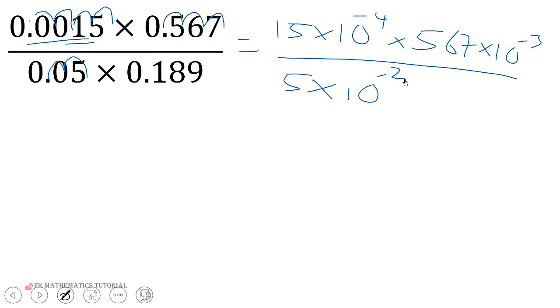And this one, 1, 2, 3, so we have 189 times 189 times 10 to the negative 3.